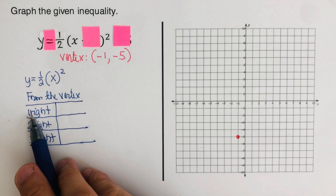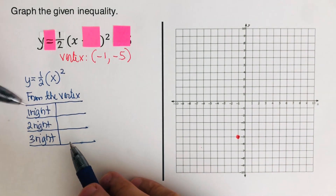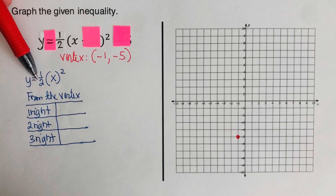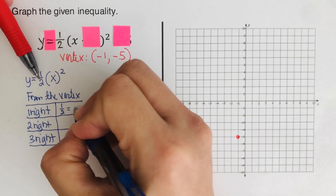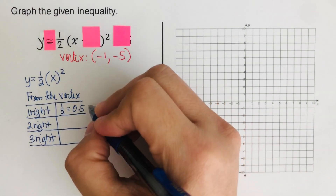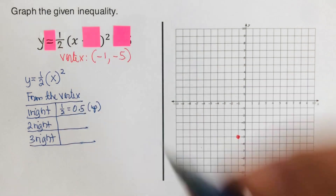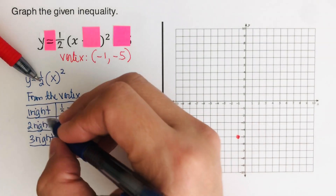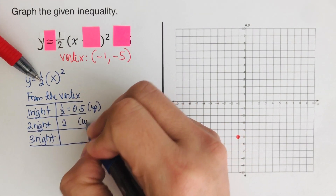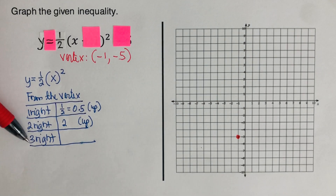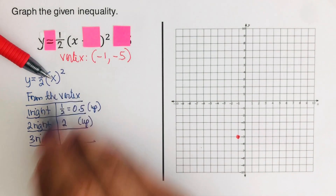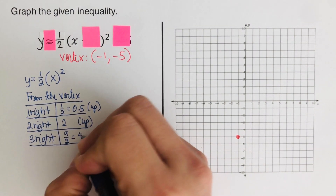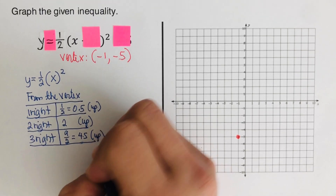We fill in the table using y = (1/2)x². For 1: 1² = 1, half of 1 = 0.5, positive so we go up. For 2: 2² = 4, half of 4 = 2, positive so we go up. For 3: 3² = 9, half of 9 = 4.5, positive so we go up.